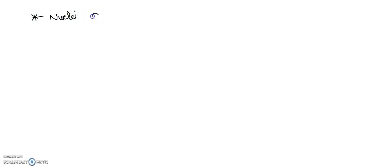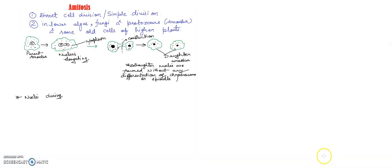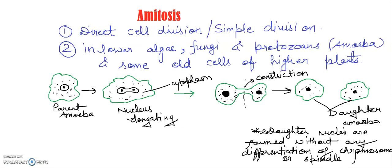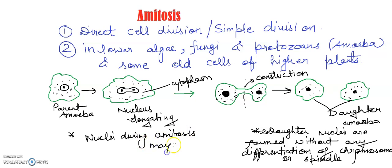One more important point: the nuclei during amitosis may or may not be of equal size. The two daughter nuclei formed may not be of the same or equal size.